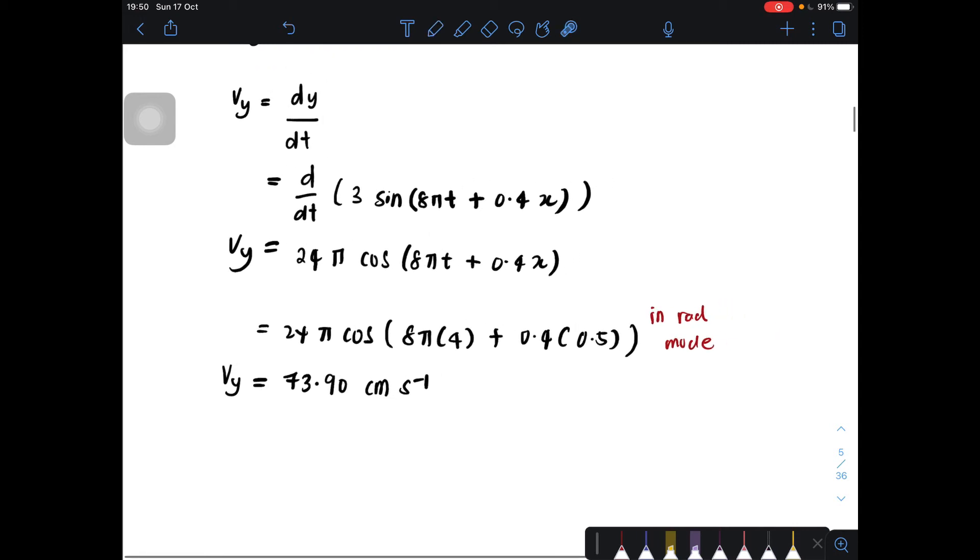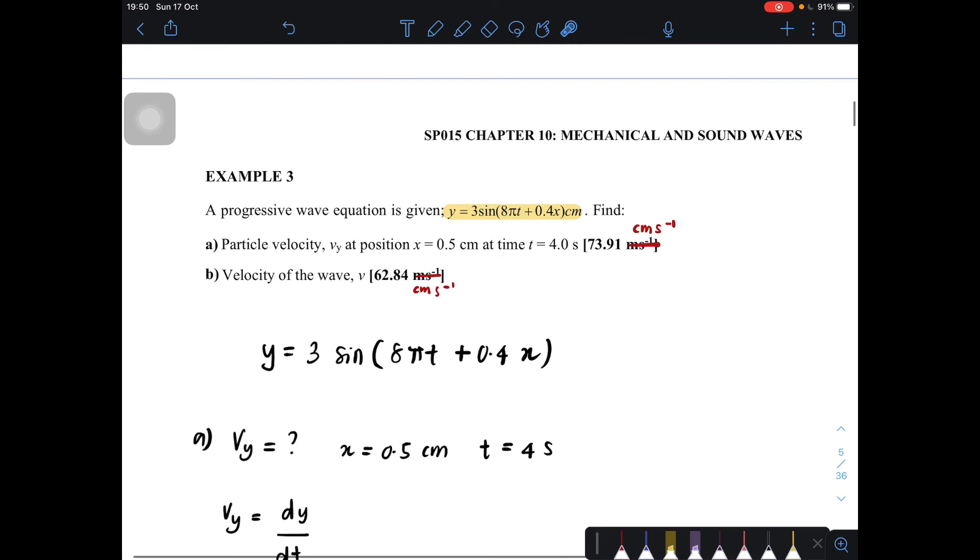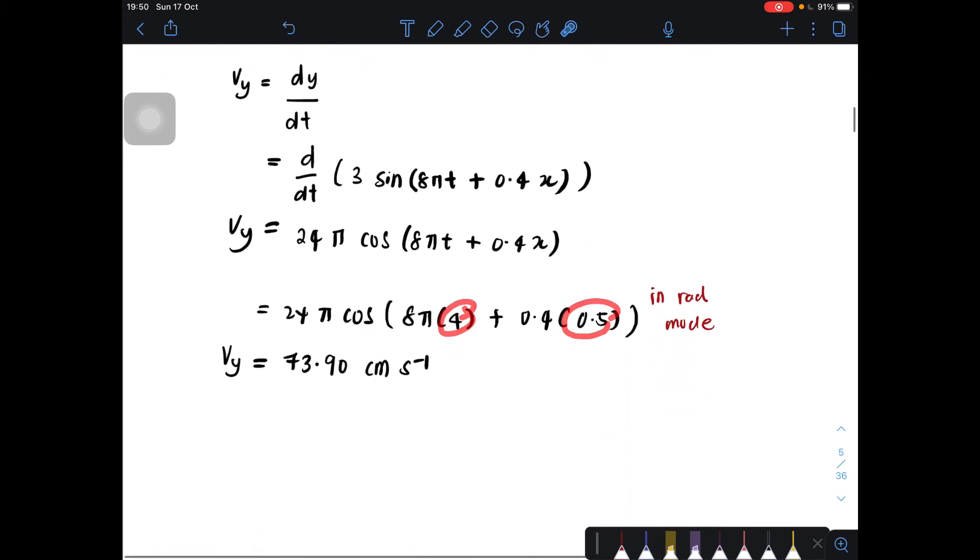So you will get vy equal to 73.90 cm per second. Okay, since our value here is cm and original equation also, this one is in cm. So cm per second. Okay, next one.